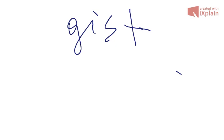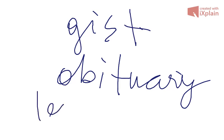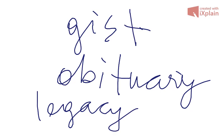Number fifteen is obituary. To tell the truth, I don't like this word. This is the notice of a death, including the brief bio of the dead person, the deceased. Deceased means the dead person. And the last word, sixteen, is legacy — a nice word which means the money or property left to somebody in a will, the inheritance, the bequest, the heritage.